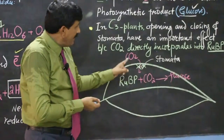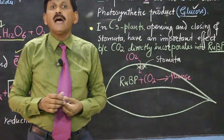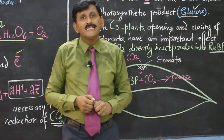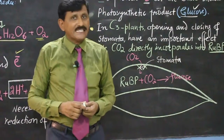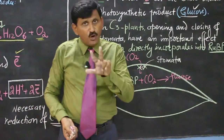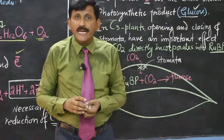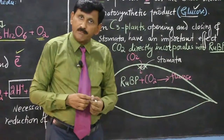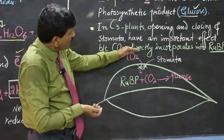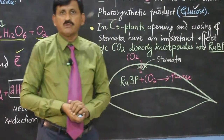In C4 plants, carbon dioxide is not directly incorporated; instead, oxaloacetic acid provides carbon dioxide. In CAM plants, various organic acids provide carbon dioxide to the Calvin cycle. Therefore, in C4 and CAM plants, the opening and closing of stomata has no effect on the photosynthetic product. In C3 plants, carbon dioxide from the atmosphere directly incorporates into ribulose bisphosphate sugar through the stomata to produce glucose, so closing the stomata will affect the photosynthetic process.